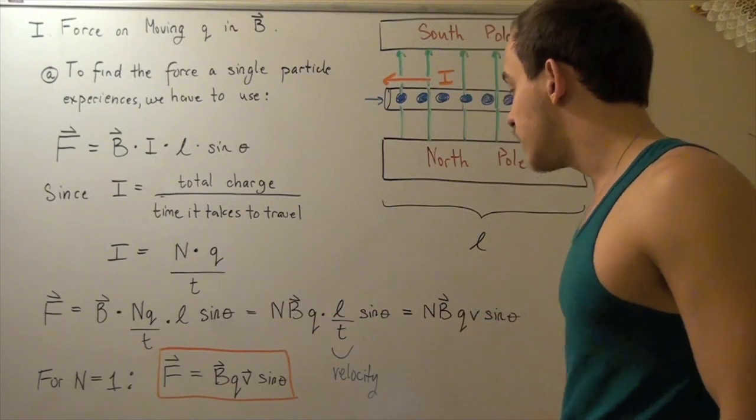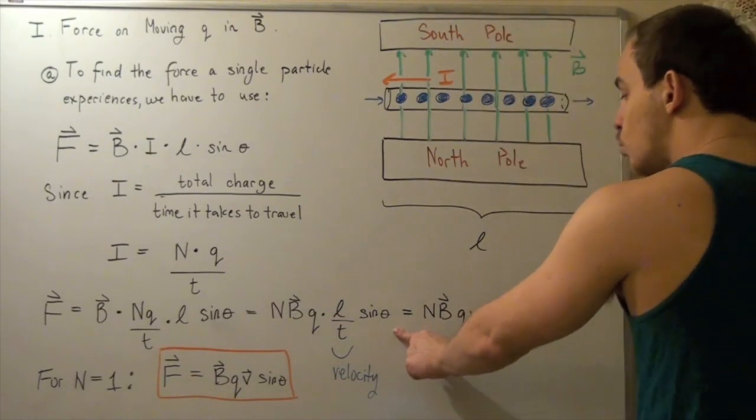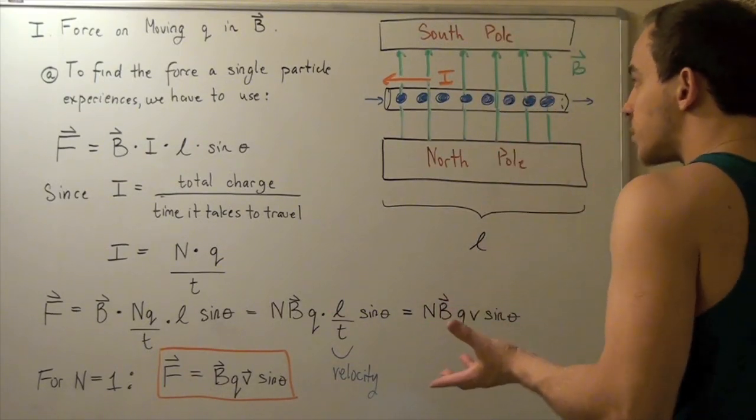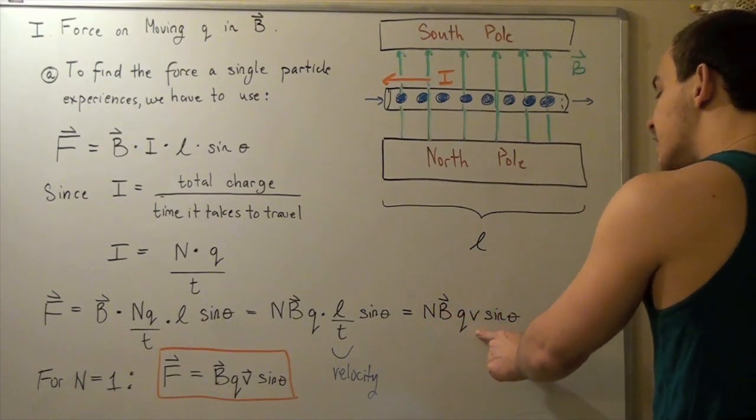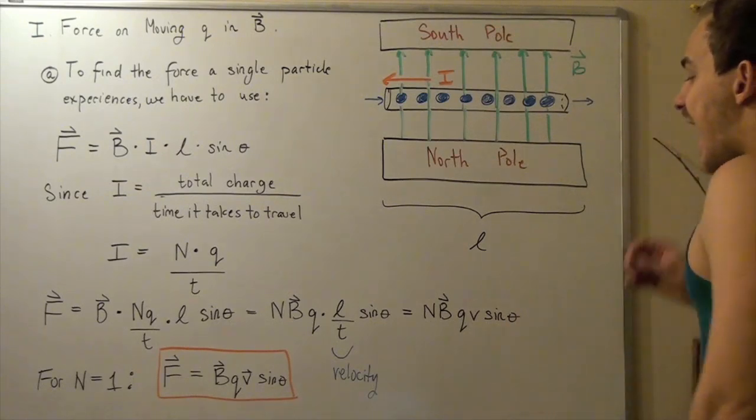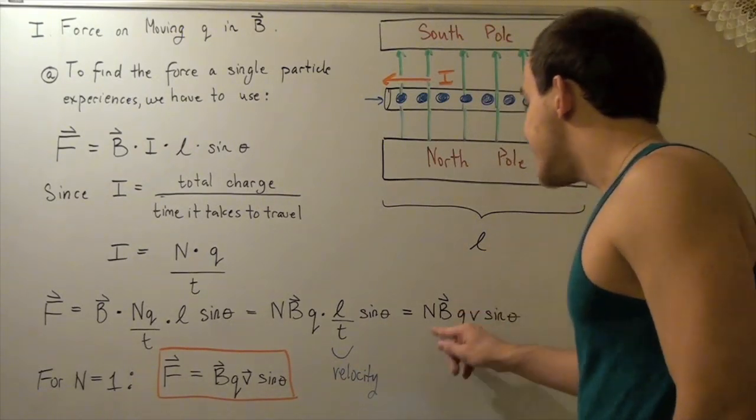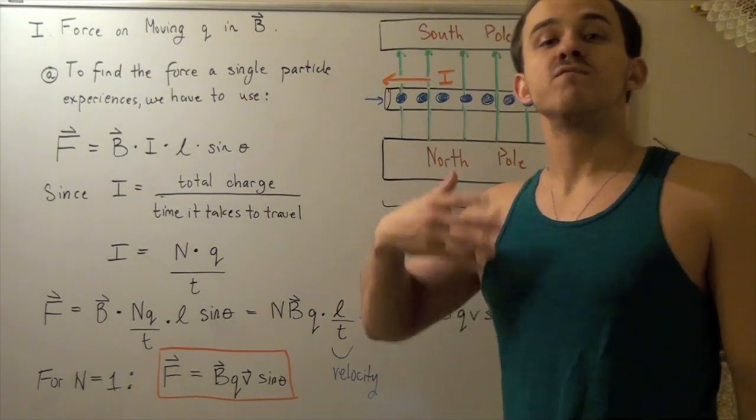I replace this with velocity, and I get equals N, the number of particles, times my magnetic field times Q times velocity of those particles times sine theta. And now, notice what N is. N is some number of particles.